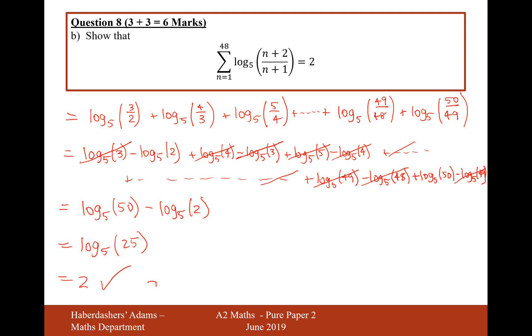So there we are, proved that question there. So lovely, it's a logs question. We have to split up the logarithms of the fractions with a subtraction. And then you can see that the stuff cancels out all the way through. And you get log 5 of 25, which is 2. So yeah, that's the question for question 8. Let's move on to question 9.